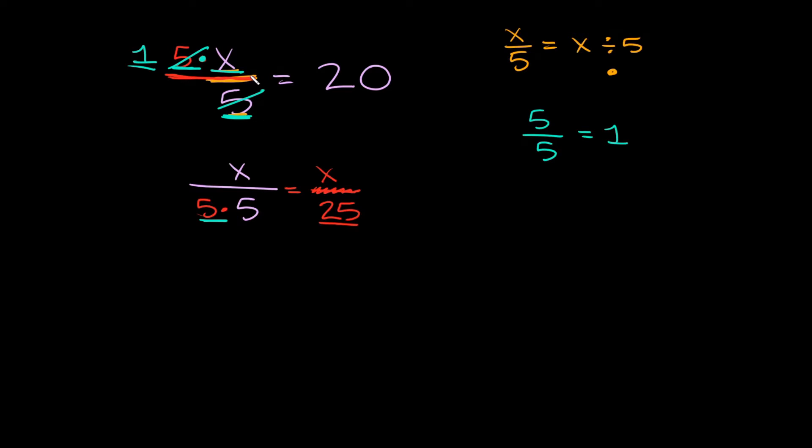Now before we move on, remember whatever you do to one side of an equation you have to do to the other. So if we're going to multiply by 5 over here we also have to multiply by 5 over here. Let's simplify. On the left side I have 1 times x and that's equal to 20 times 5.